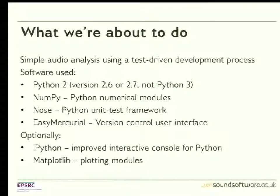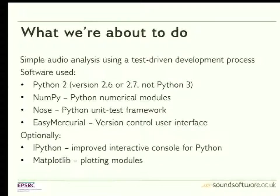The example I'm going to go through is a very simple piece of audio analysis — the most straightforward, trivial tempo estimator — using Python because it's easy to write and read, NumPy as the Python numerical module, and a unit testing framework called Nose. We'll also use version control using Mercurial and the Easy Mercurial user interface. Although entirely in Python, there's nothing specific to that framework — there's also a piece about unit testing in C++ in your handout.